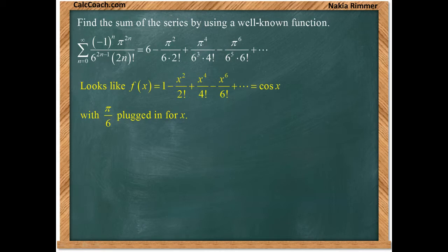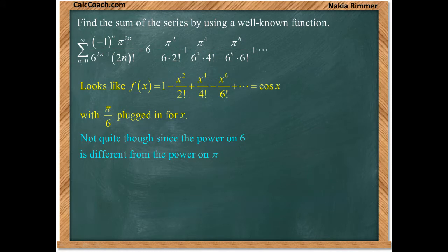The power on 6 doesn't match the power on pi. And if pi over 6 is plugged in, then it needs to be both pi and 6 raised to the nth power each time.